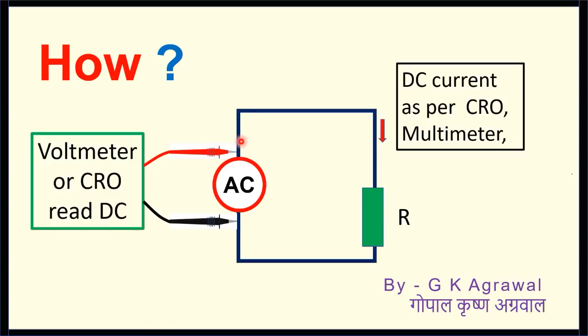Similarly, current flowing here is AC, but multimeter and CRO are reading DC current. How is this possible?